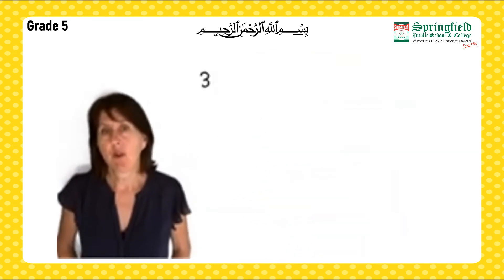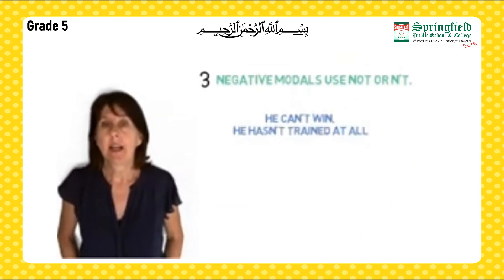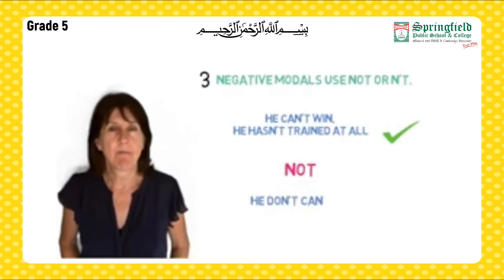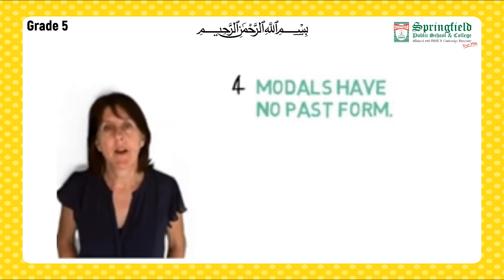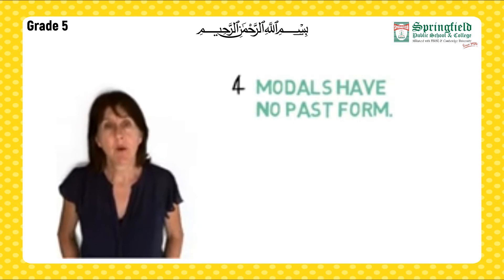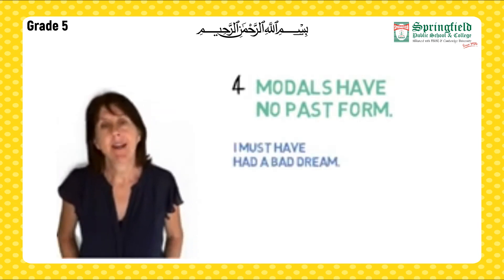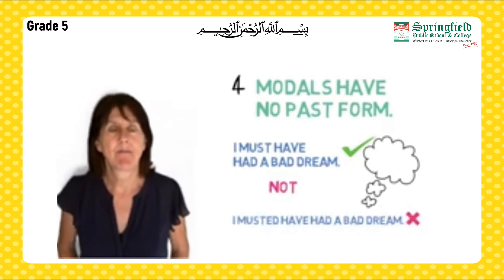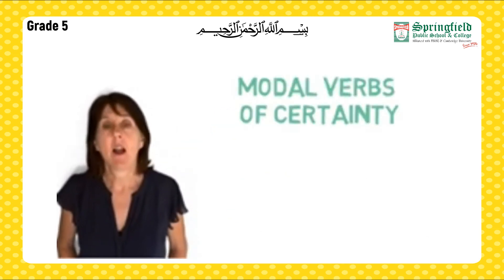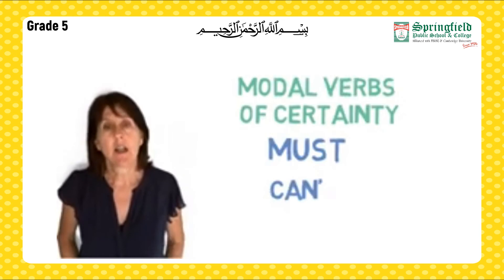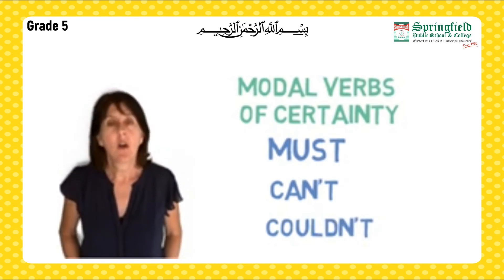Negative modals use 'not' or the abbreviation 'n't' — 'he can't win,' not 'he don't can win.' Modals have no past form — the verb following the modal shows the tense: 'I must have had a bad dream,' not 'I musted have had a bad dream.' Modals of certainty are 'must,' 'can't,' and 'couldn't' — used when you are nearly sure something is true or not true.